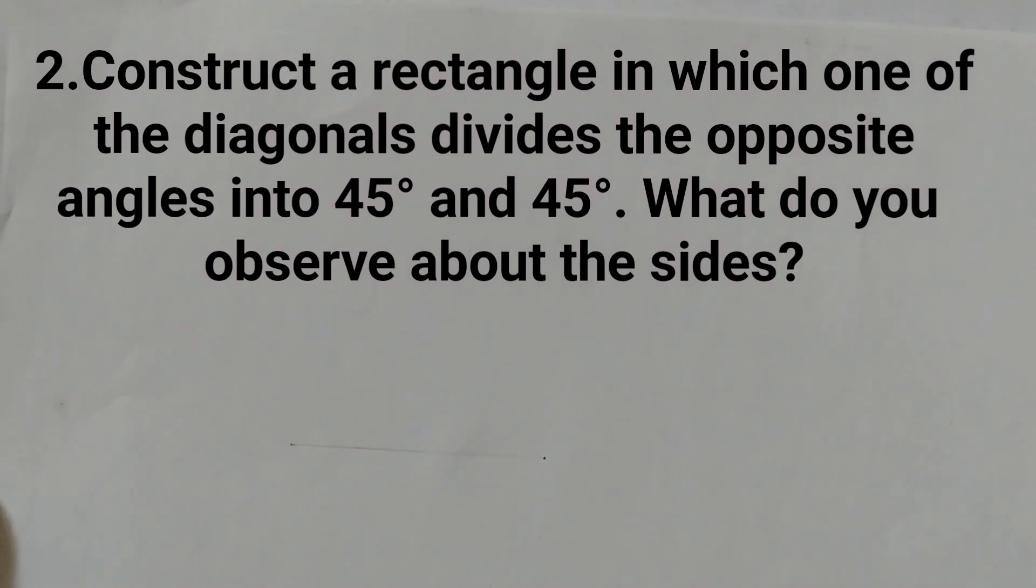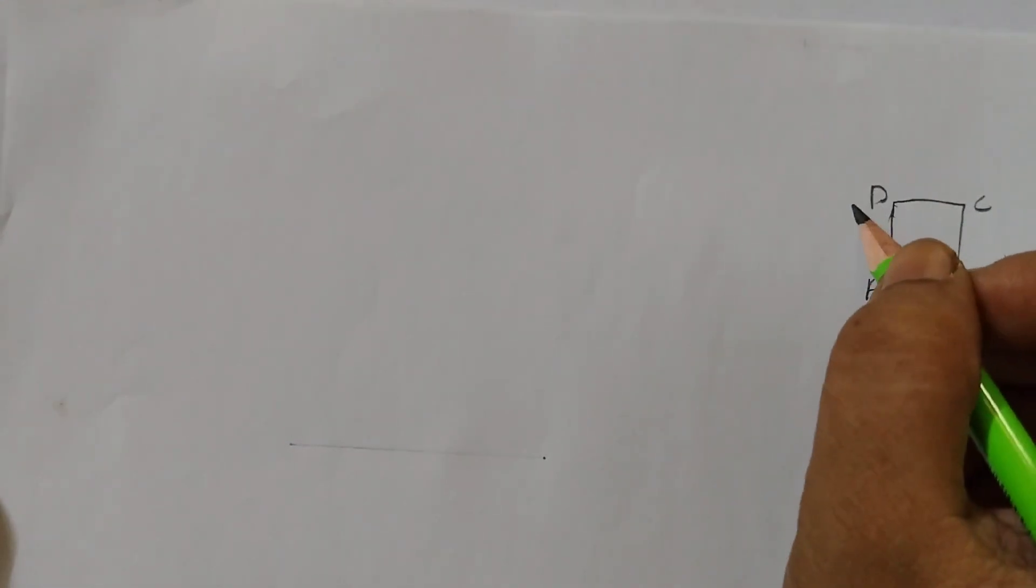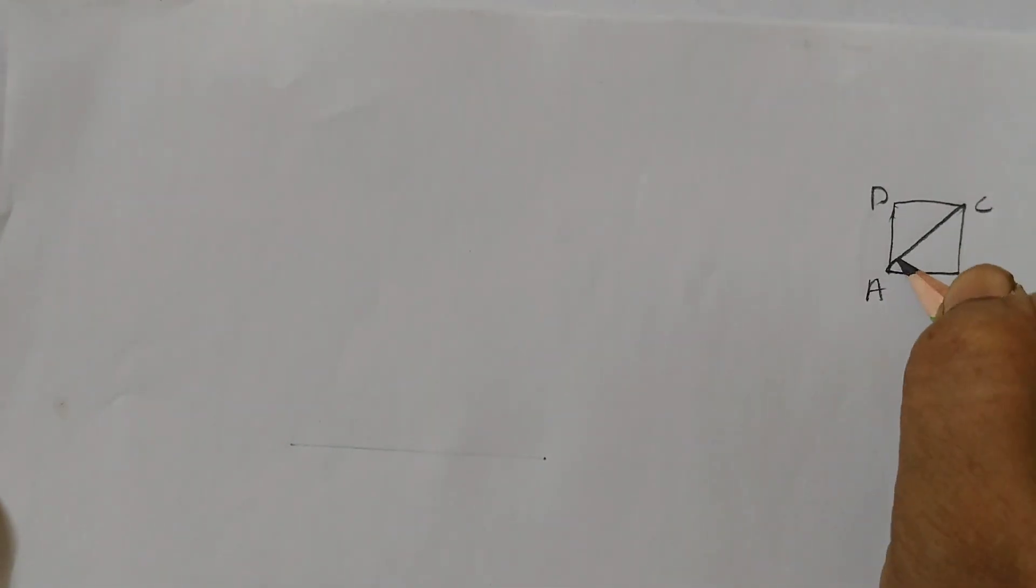First we will draw a rough sketch of our figure. We are going to have a rectangle labeled as A, B, C, D, and the diagonals divide the opposite angles into 45 degrees and 45 degrees. This is 45 degrees, and this is also 45 degrees.